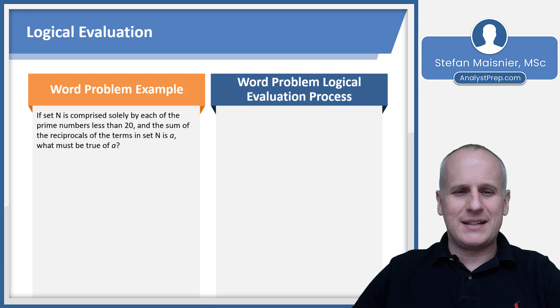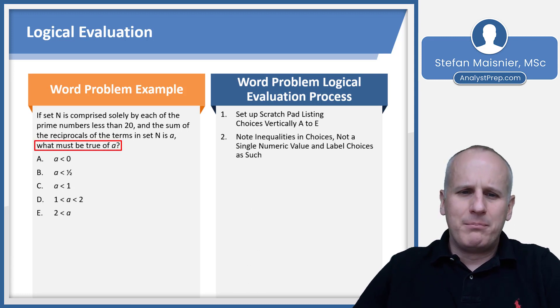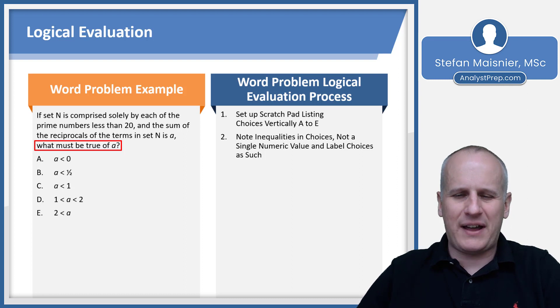Let's take a look at another example, this time a word problem for logical evaluation. So we set up our scratch pad, listing those choices vertically A through E. We skip to the end and we're being asked for this inexact value of what must be true of A. We note that there are these inequalities in the choices, not a single numeric value. So that means I'm not necessarily going to need to solve for one specific value directly. We just need to know what must be true of A.